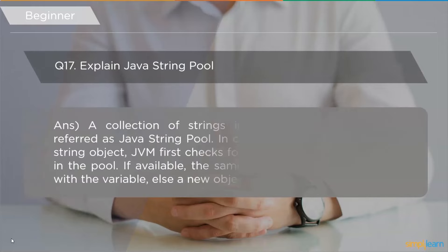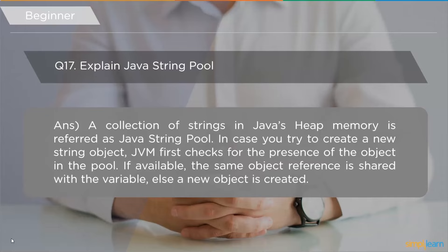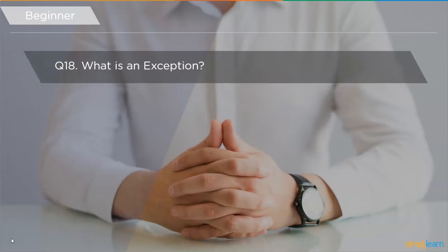The next question is: explain Java string pool. A collection of strings in Java's heap memory is referred to as the Java string pool. When you create a new string, the JVM first searches for it in the string pool. If it already exists, it provides a reference to that string. If it does not exist, the JVM creates a new string object.